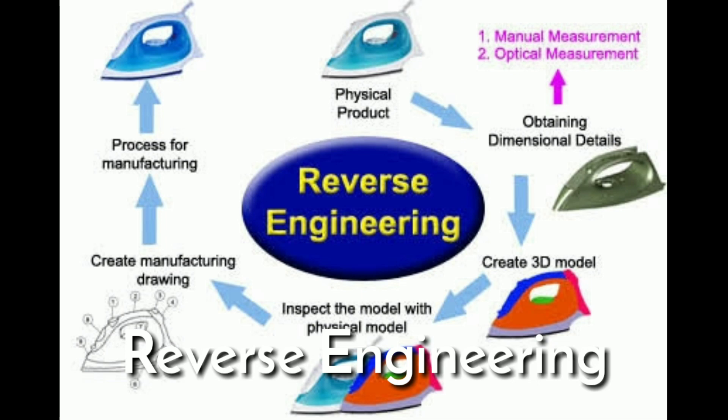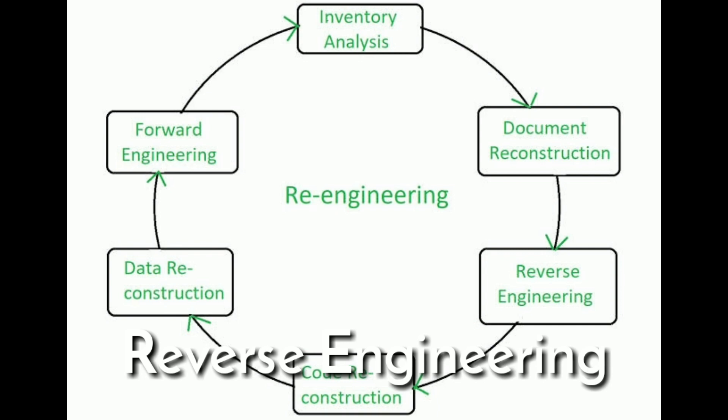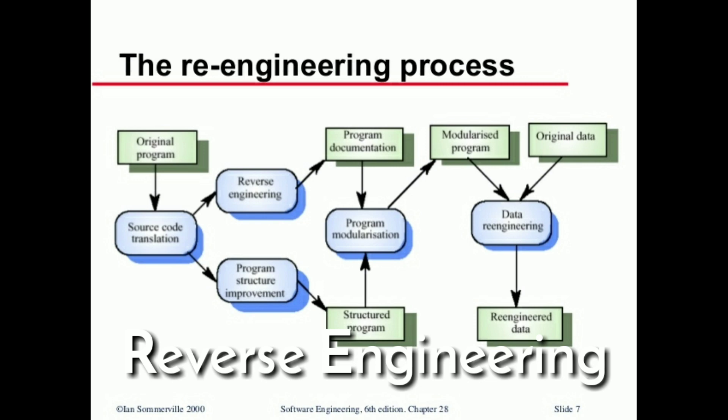As computer-aided design has become more popular, reverse engineering has become a viable method to create a 3D virtual model of an existing physical part for use in 3D CAD, CAM, CAE or other software. The reverse engineering process involves measuring an object and then reconstructing it as a 3D model. The physical object can be measured using 3D scanning technologies like CMMs, laser scanners, structured light digitizers, or industrial CT scanning computed tomography.